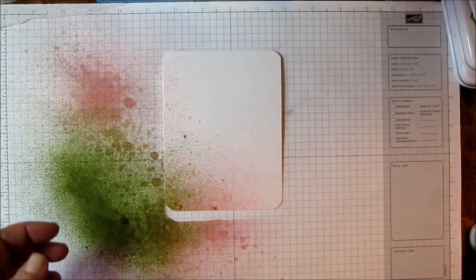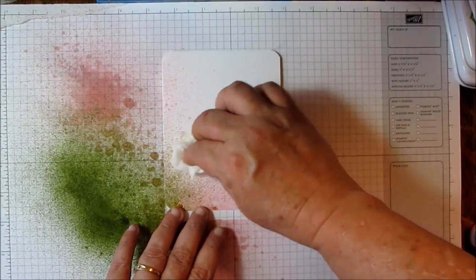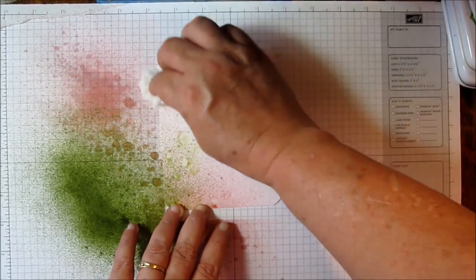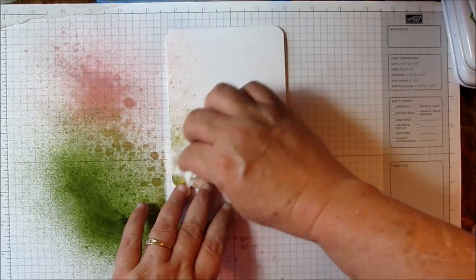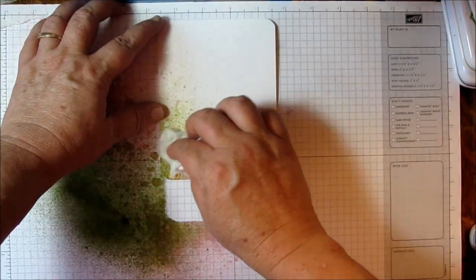This should be dry enough now. What I'm going to do with my damp paper towel is come back and do a little bit of rubbing, and that will reveal some of the resist areas and remove some of that ink that's on top of them.